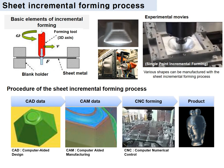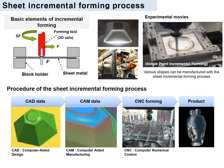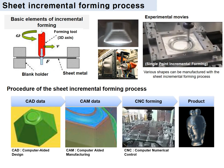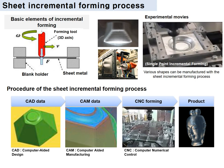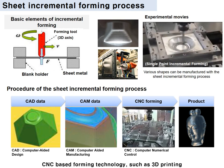The procedure of the sheet incremental forming process is shown in the figure. First, the CAD data is generated from the CAD program. After that, the tool path is generated through the CAM process. Using the generated G-code, the sheet is formed in the three-dimensional CNC machine. The sheet incremental forming process is a CNC-based forming technology, such as 3D printing.